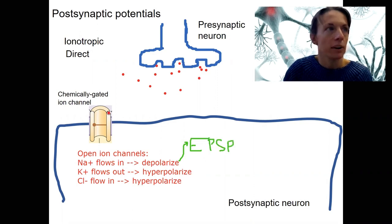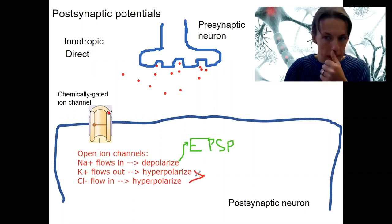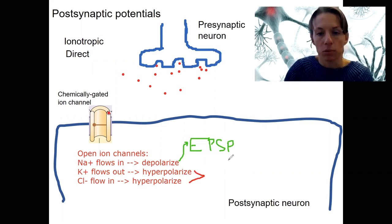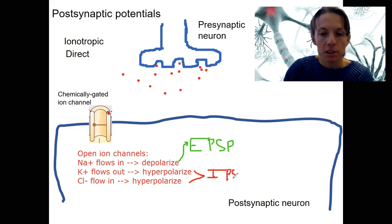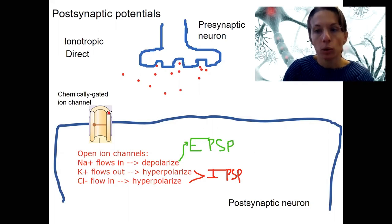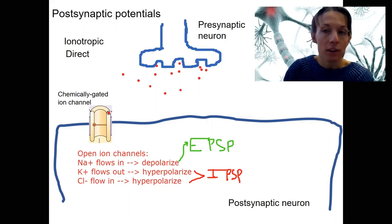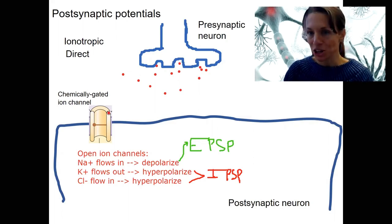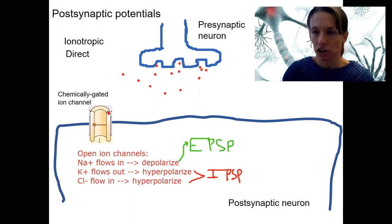Then we've got some inhibitory signals — hyperpolarizing the cell brings it further away from threshold. These are inhibitory post-synaptic potentials, IPSPs. These post-synaptic potentials are graded potentials. They are local. They can be different sizes. They can summate — add together or take away from each other — to become action potentials, but they don't always become an action potential.